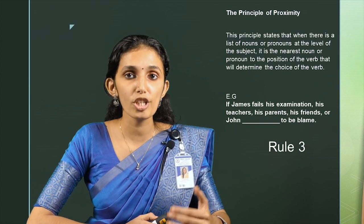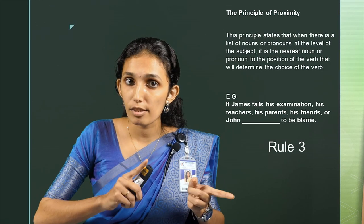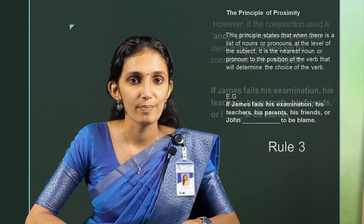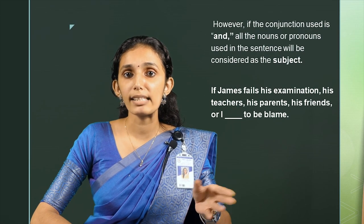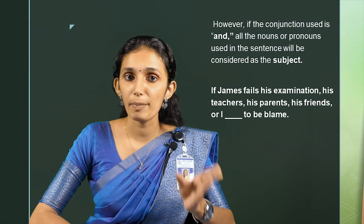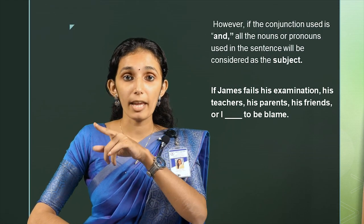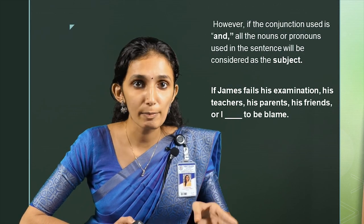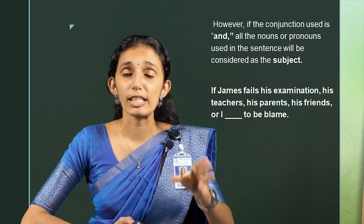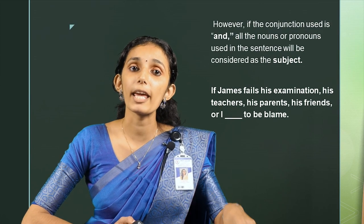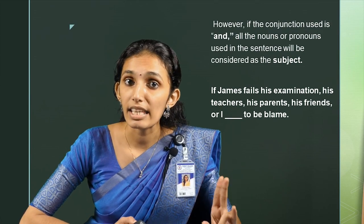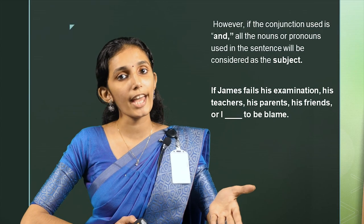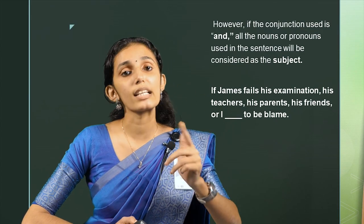However, if the conjunction used is AND instead of OR, all the nouns or pronouns used in the sentence will be considered as a subject. For example, '...his teachers, his parents, his friends, and John are to be blamed.' But if the question uses 'or I,' the answer will be AM, because the pronoun I is the nearest subject to the gap, so the verb that goes with it is AM.